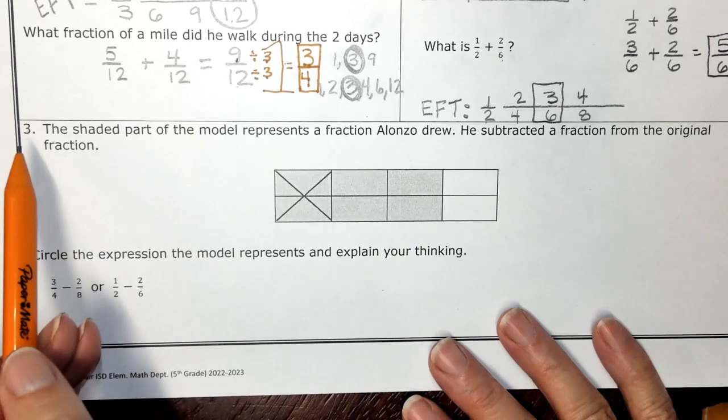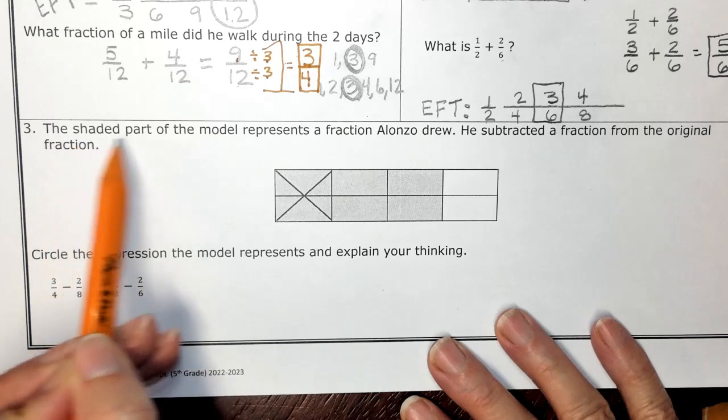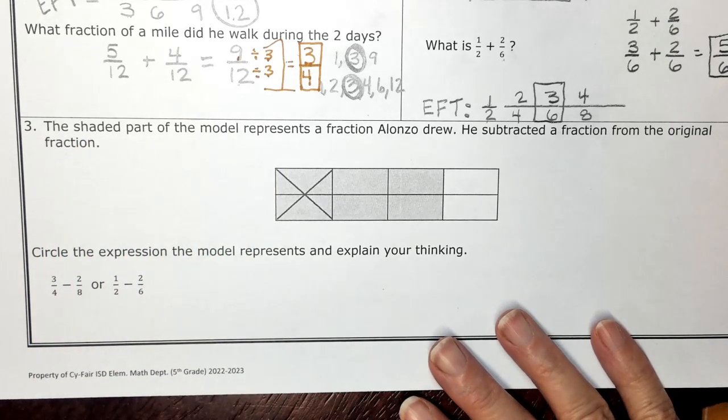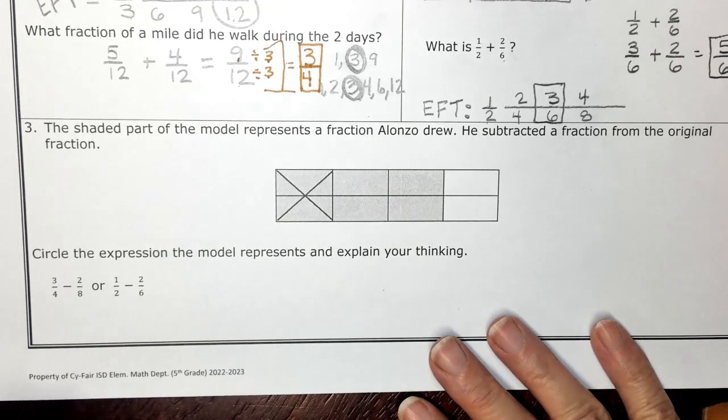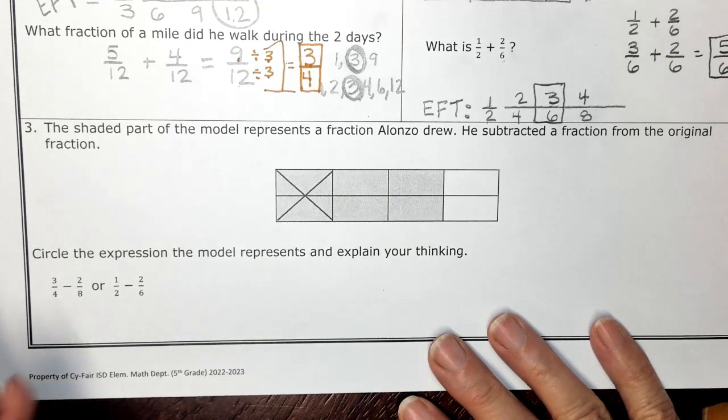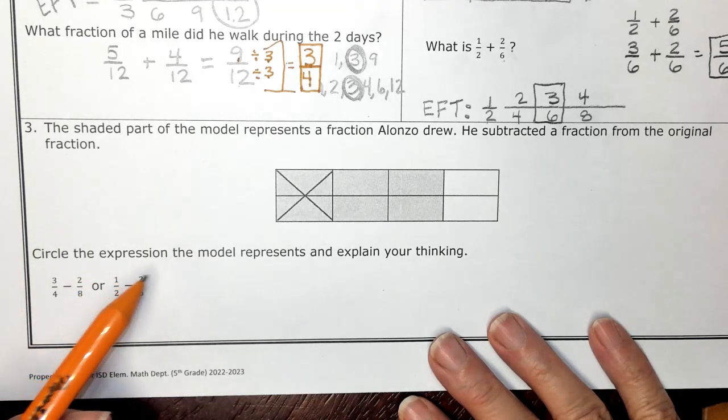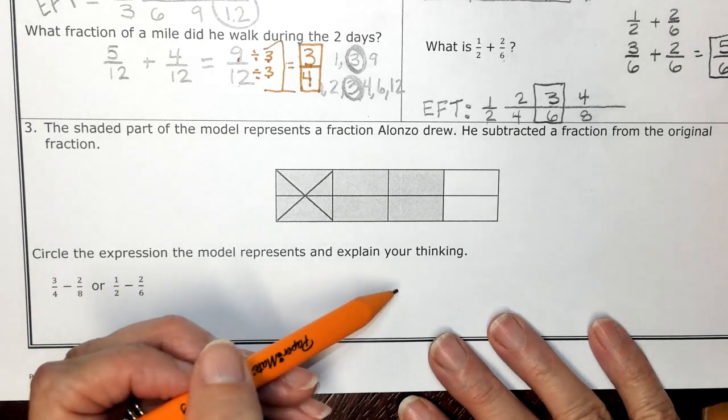Alright, number three. The shaded part of the model represents the fraction Alonzo drew. He subtracted a fraction from the original fraction. Circle the expression the model represents and explain your thinking.